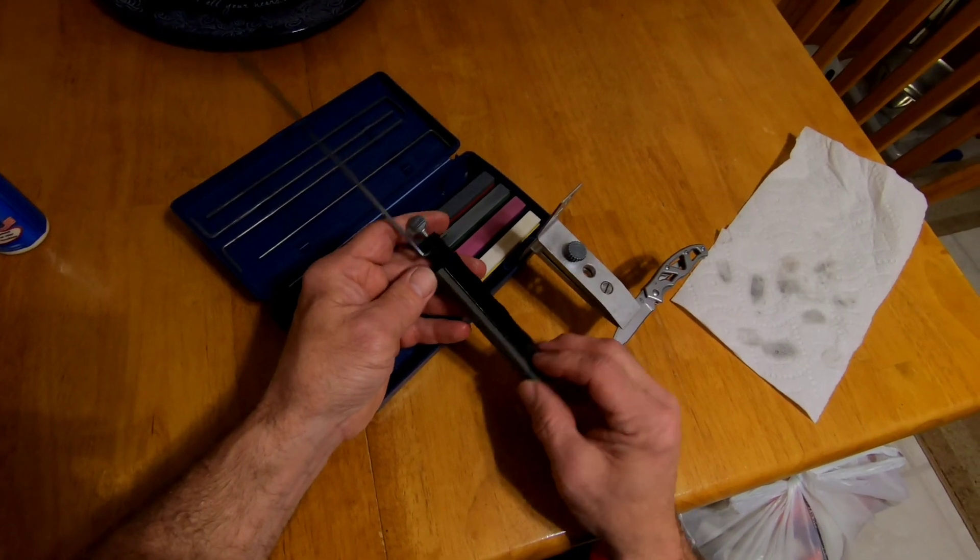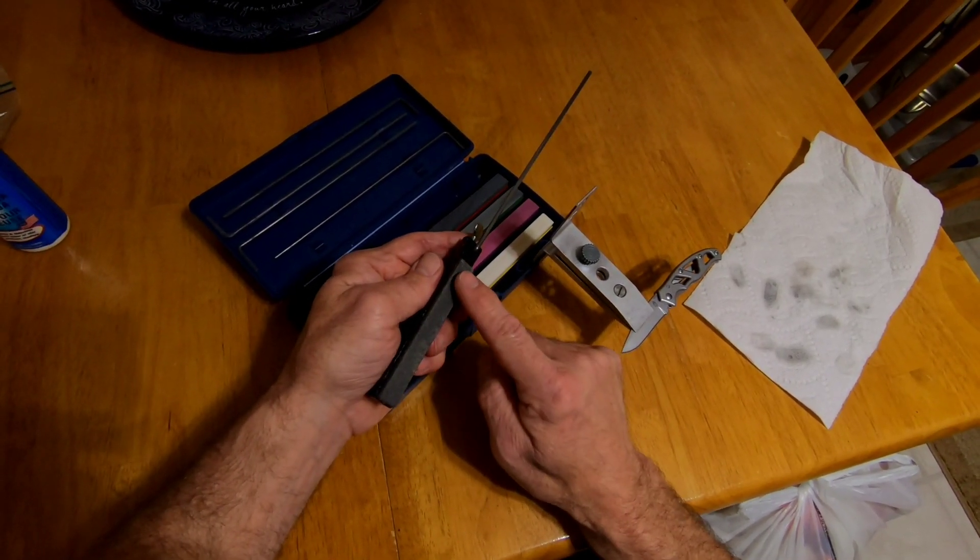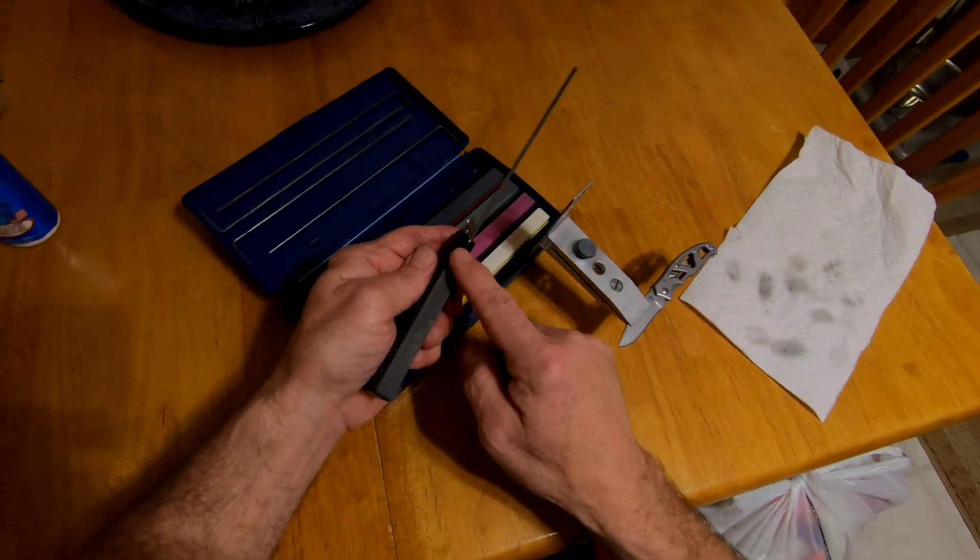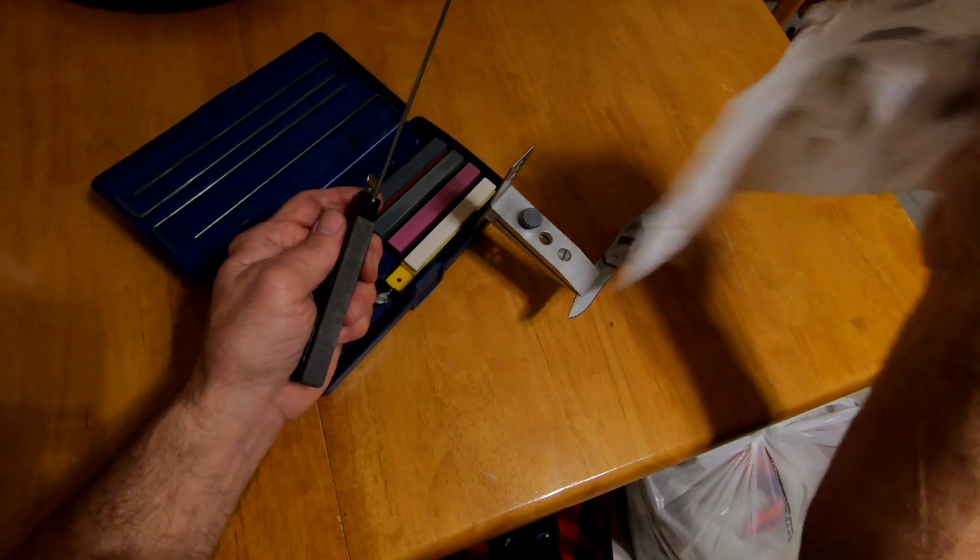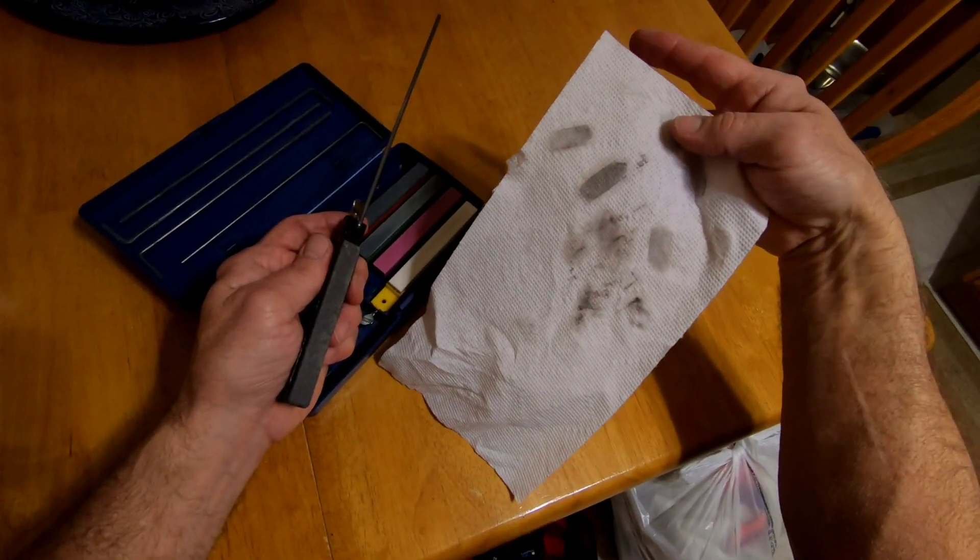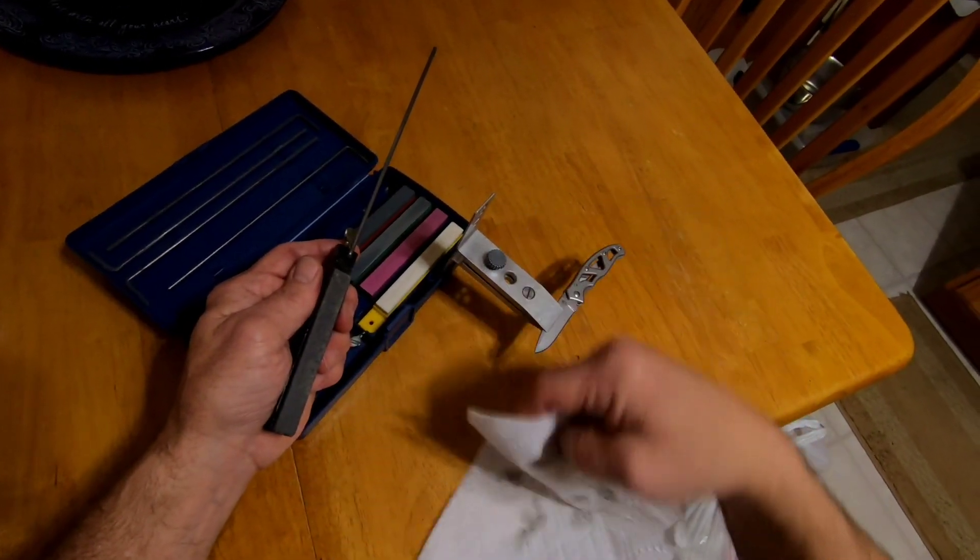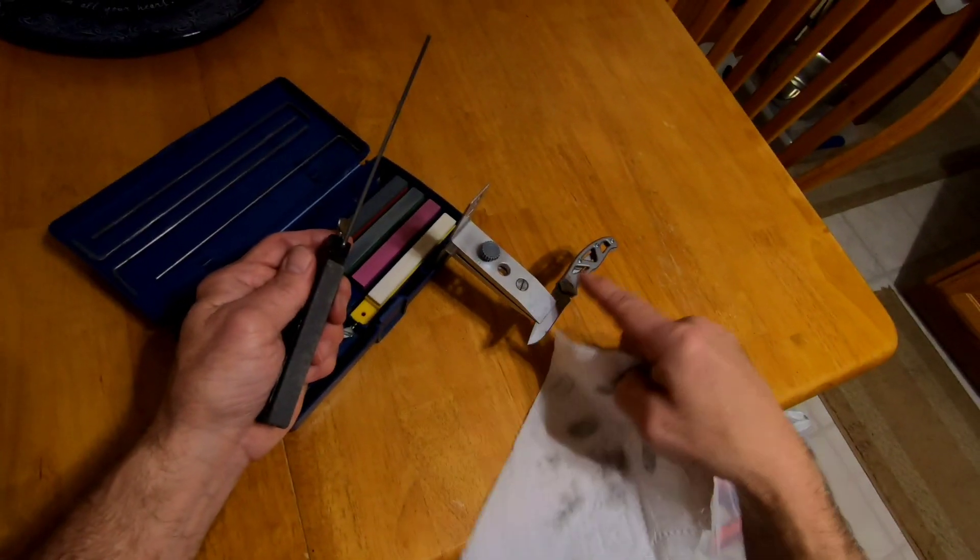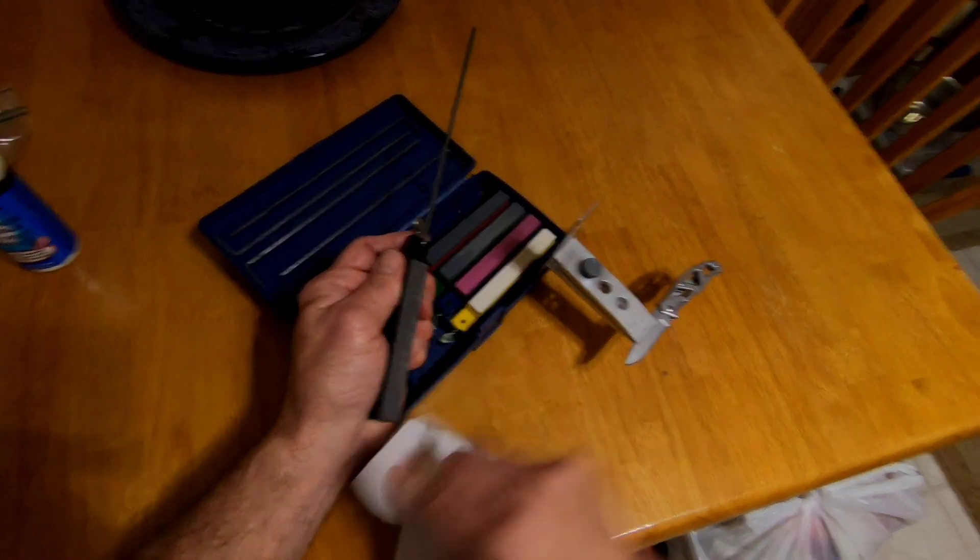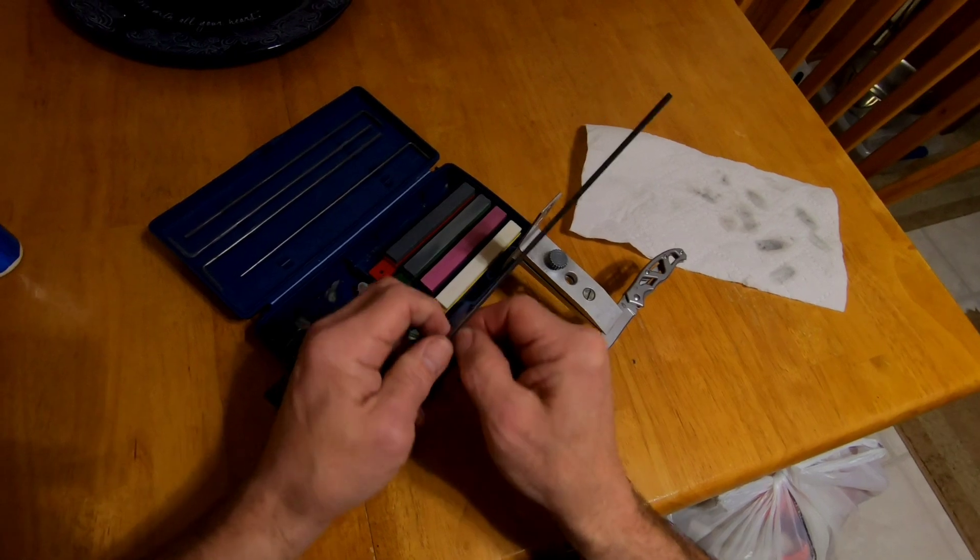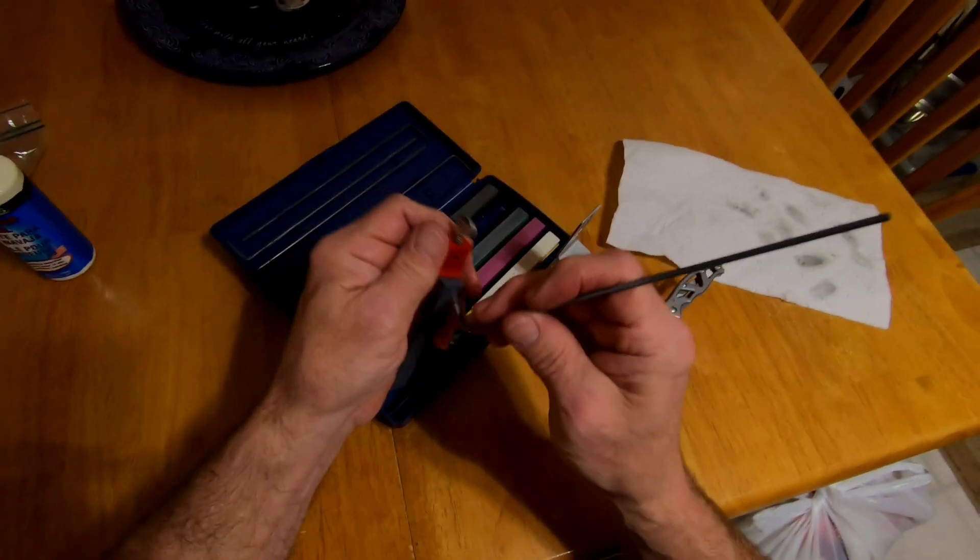Okay, we got done with our extra coarse stone. And one thing I should mention is, after you go over your knife blade so many strokes with the stone, just get it and wipe it off. Because you can see here what comes off your stone. The stone itself actually wears away and little metal particles come off your blade. You don't want that to clog up your stone, so you want to wipe it off. So, like I said, then you just go to your next stone, the coarse.